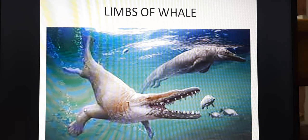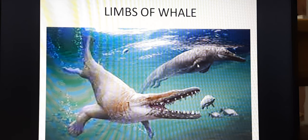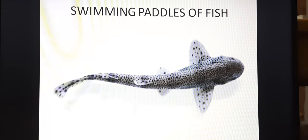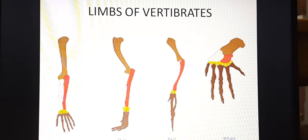Next you see how limbs have changed. These are the limbs of whale, which have ultimately changed to either wings, or our hands, or the limbs of other organisms. Here you see this is the swimming pedal of fish. Different structures have a common ancestral design. For example, paddles in whale, wings in bird, long legs of horse, etc.